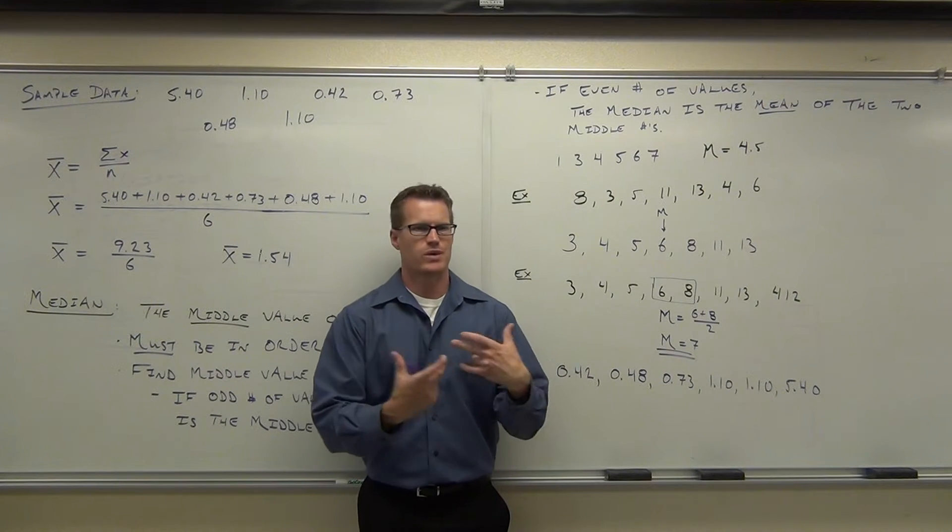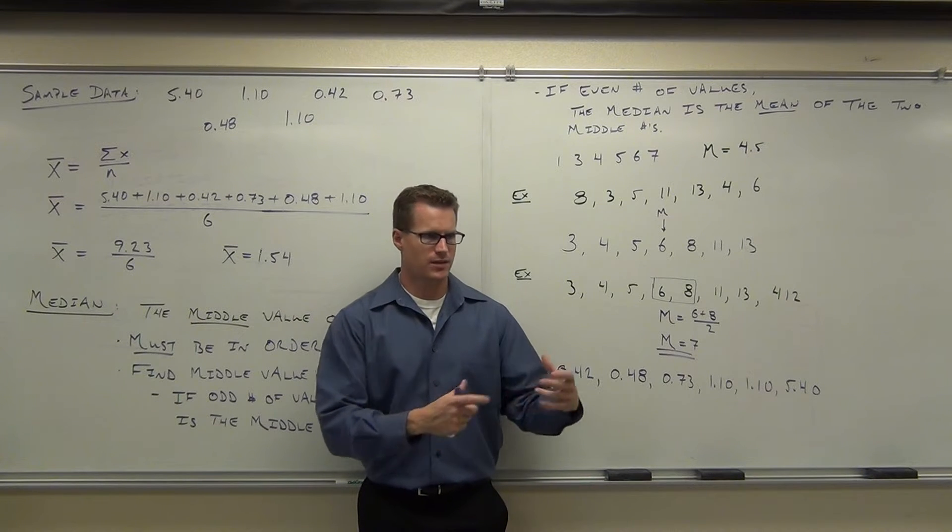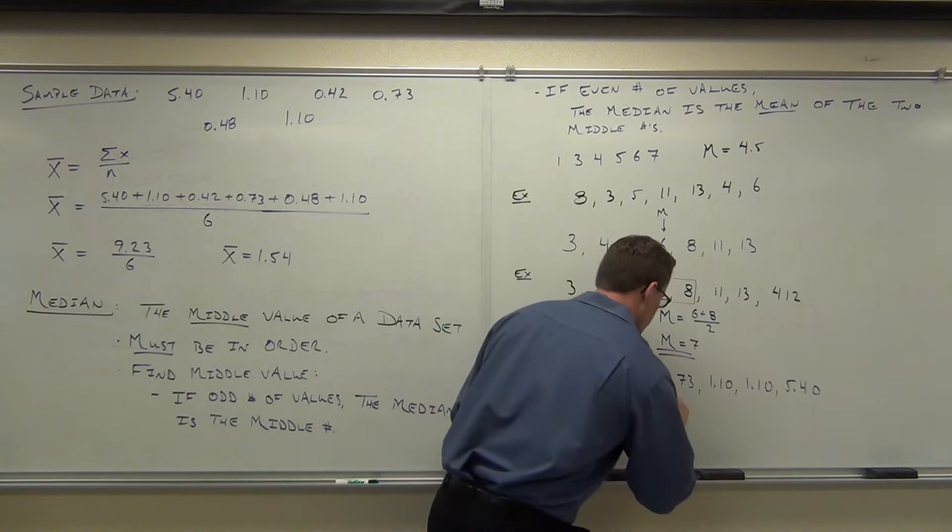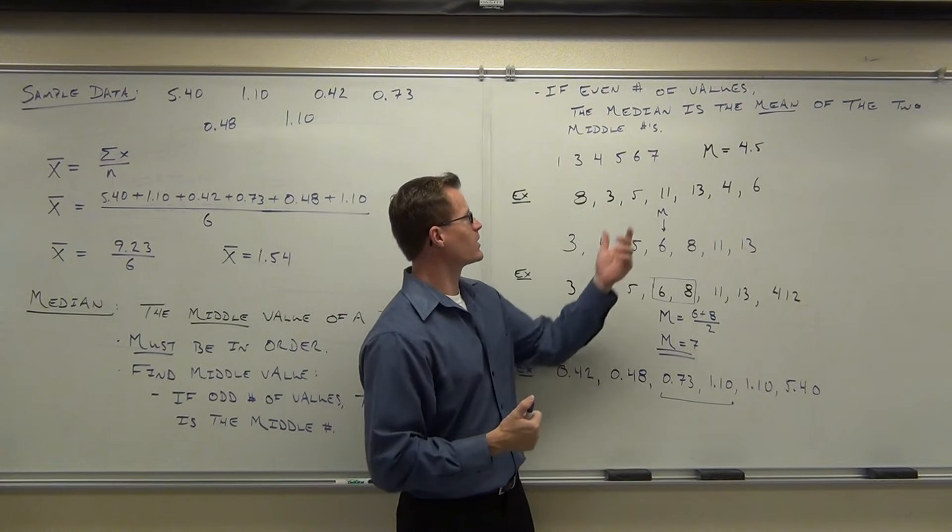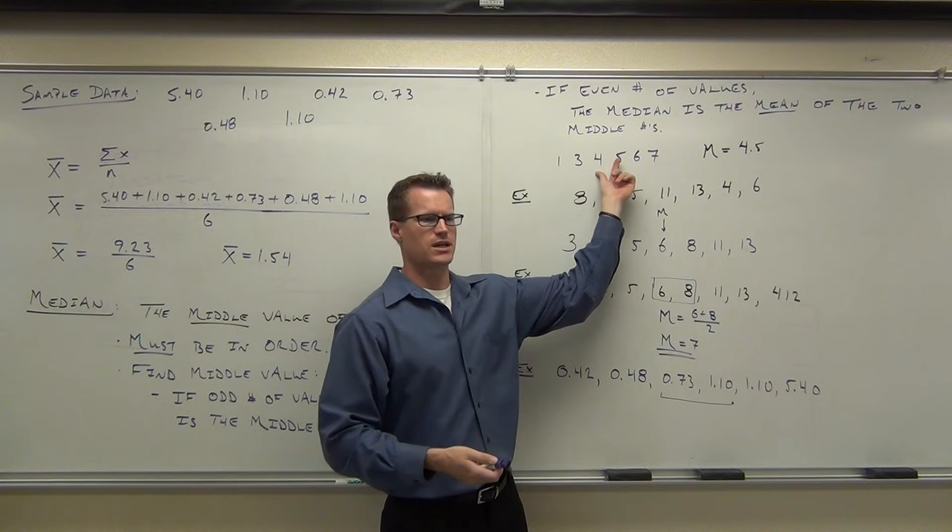The median, since we have an even number of values, you see that, right, we have an even number of values. The median is not apparent to us, but we do have these two that are right in the middle. Now in other cases, it was pretty easy to find the median because you're like, oh, well, what's right in between 4 and 5? Well, that's 4.5. That's pretty easy.